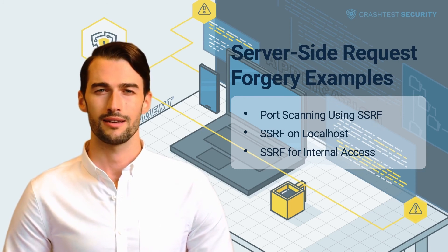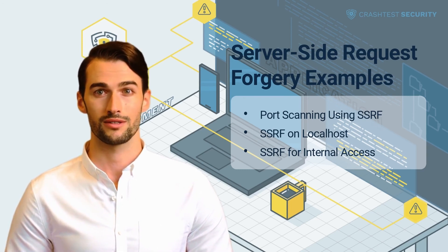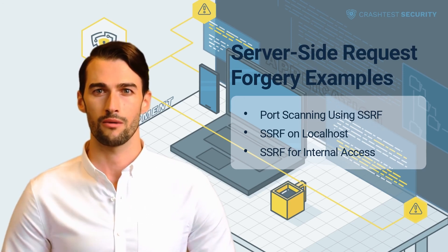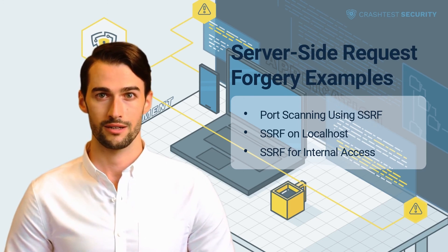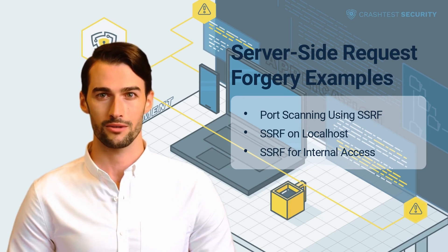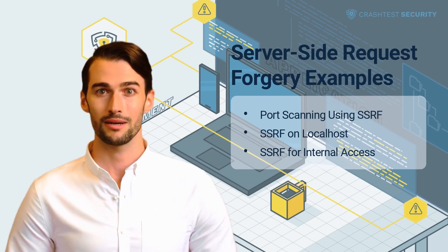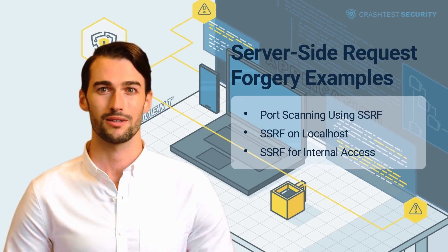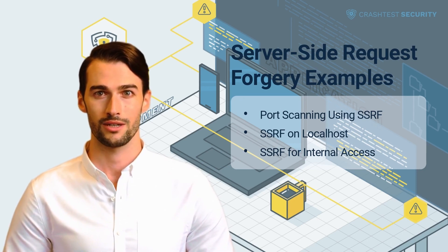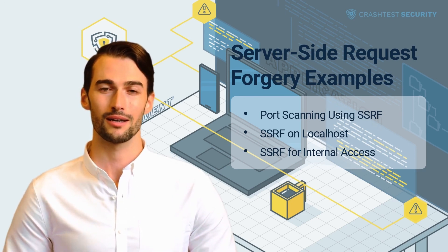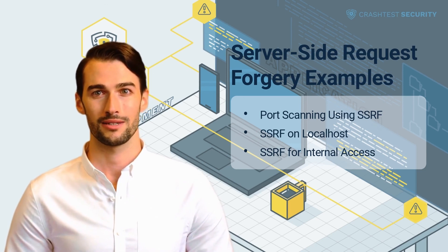SSRF for internal access. Assuming the same application uses the following request for product specifications: https://darwinmarket.com/products?url=https://productspecs.com/specs?id=24. The attacker can craft a malicious request to obtain access to internal portals: https://darwinmarket.com/products?url=https://productspecs.com/admin. This would let the hacker access the admin portal that can only be viewed within the network. The hacker can then escalate privileges with administrative access to extend the exploit further.